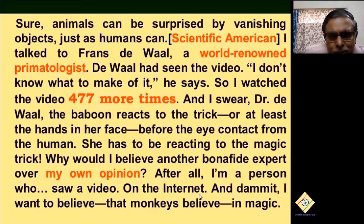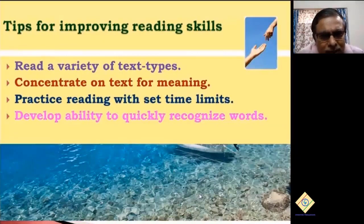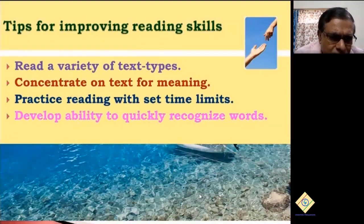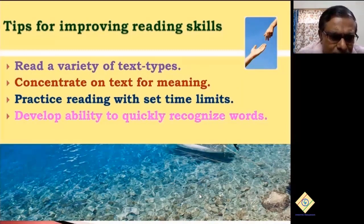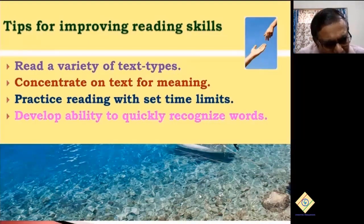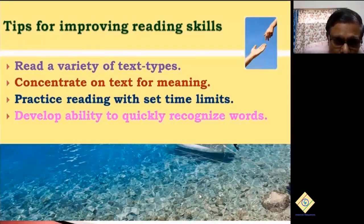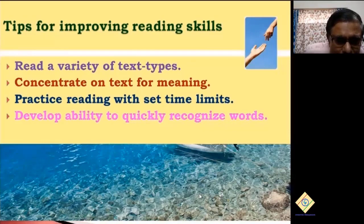Such critical reading ability comes from practice. Here are some tips to improve your reading skills: read a variety of text types, concentrate on the text for meaning, practice reading with set time limits, and develop the ability to quickly recognize words. Some people read 10, 20, or 30 pages per hour — it depends on the text. When you read to quickly recognize words, you can increase your speed.